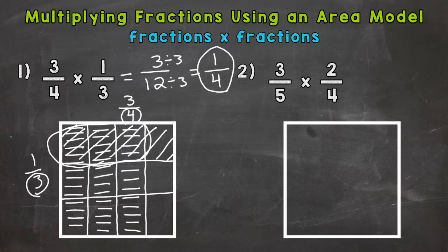So let's try number two here where we have three-fifths times two-fourths. So we'll start with three-fifths. We'll write that up top. Now we need to cut into fifths. And we need to fill in three of them. And I'll do horizontal lines here.